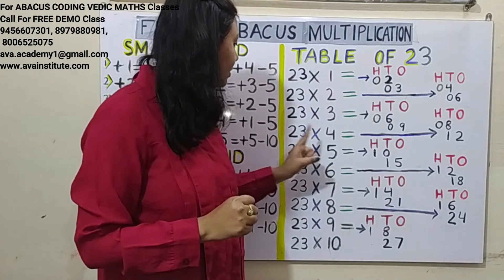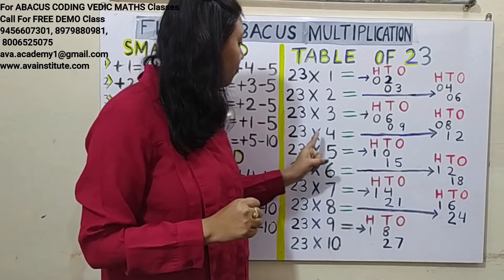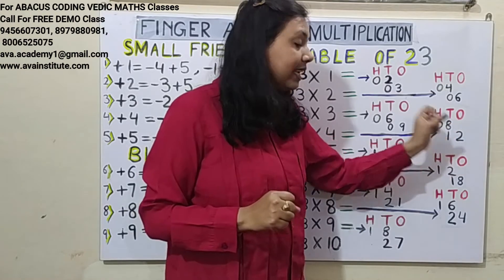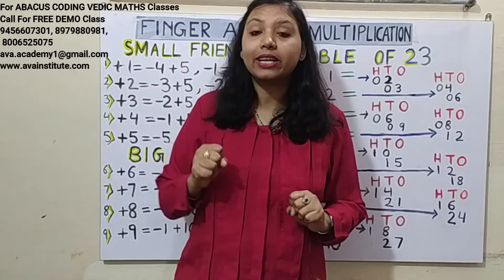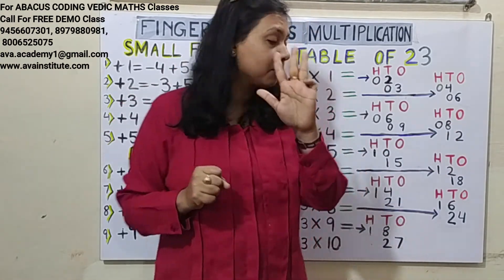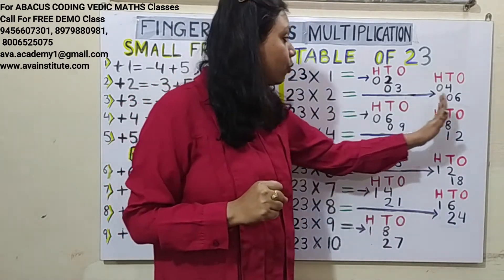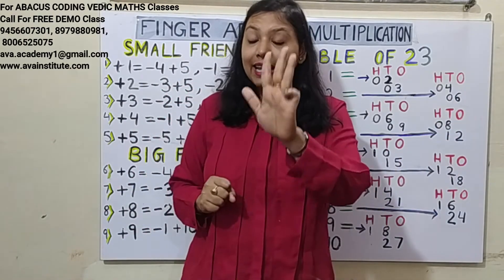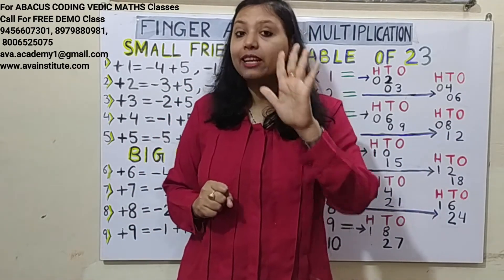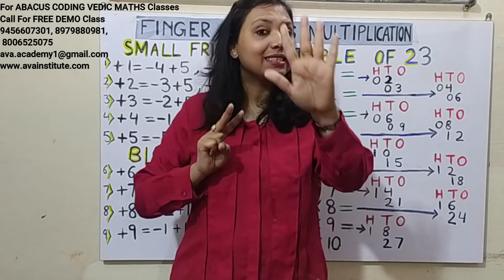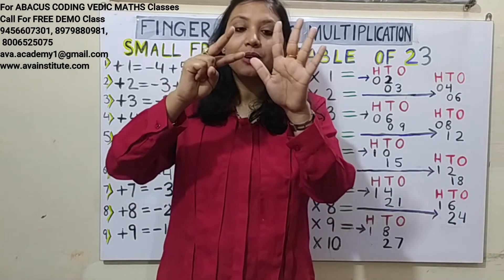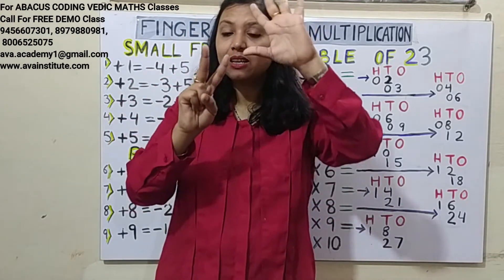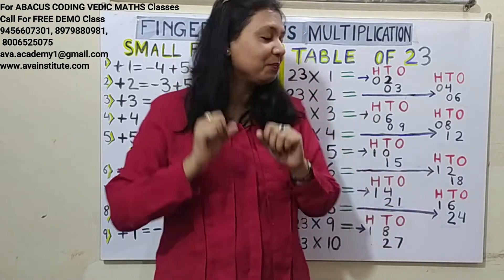23 × 4: 2 × 4 = 8, in 100's: 0, in 10's: 8. 3 × 4 = 12, so in 10's add 1, in 1's add 2. Answer is 92.